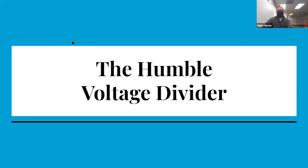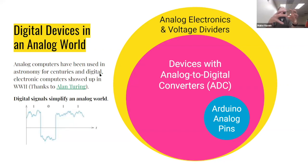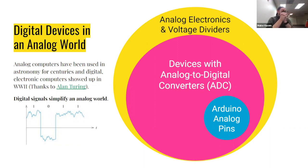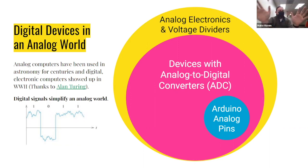To understand how these inputs work, we need to talk about the voltage divider and the context these all live in — digital devices in an analog world. Analog computers have been used for a very long time. Thousands of years ago, devices were made to count and predict solar eclipses; shipwrights built complex gear sets to predict tides. There are all sorts of analog ways to compute things, and this area of research has become more popular again in recent years.